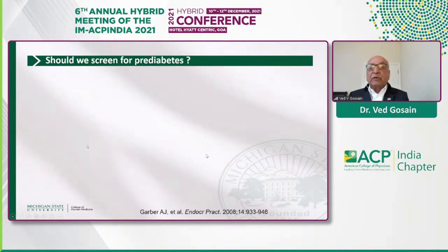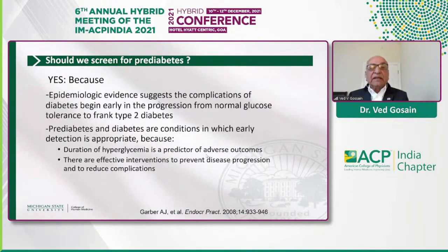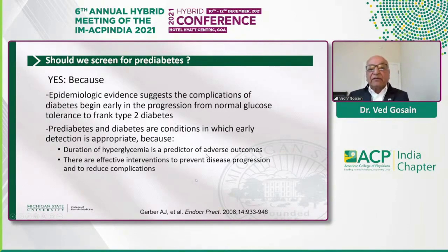Should we screen for prediabetes? The answer is yes, because epidemiological evidence suggests that complications begin early and progress as hyperglycemia progresses. We now have effective interventions to prevent disease progression. Therefore, prediabetes meets all the criteria for screening.